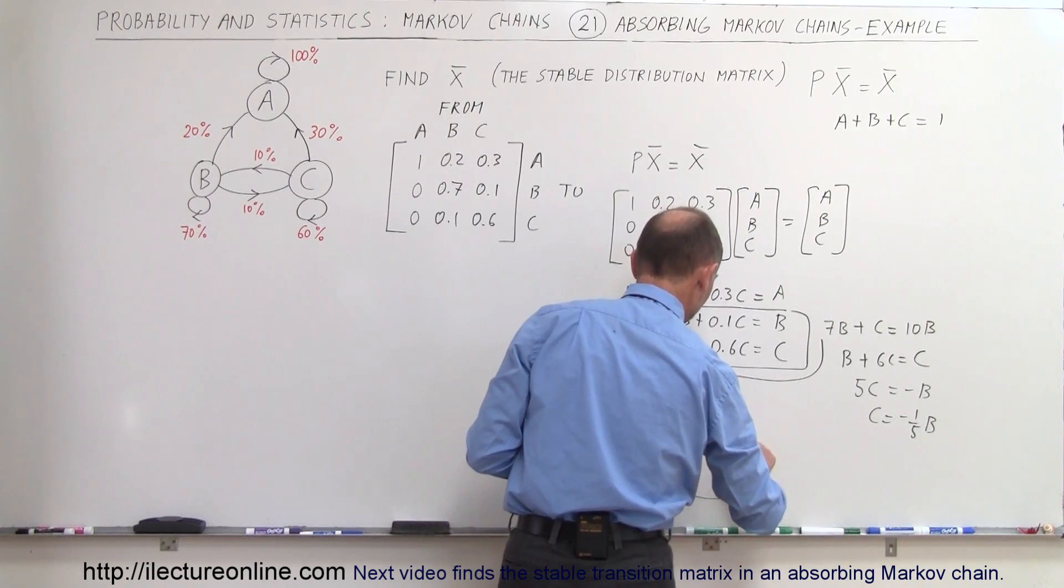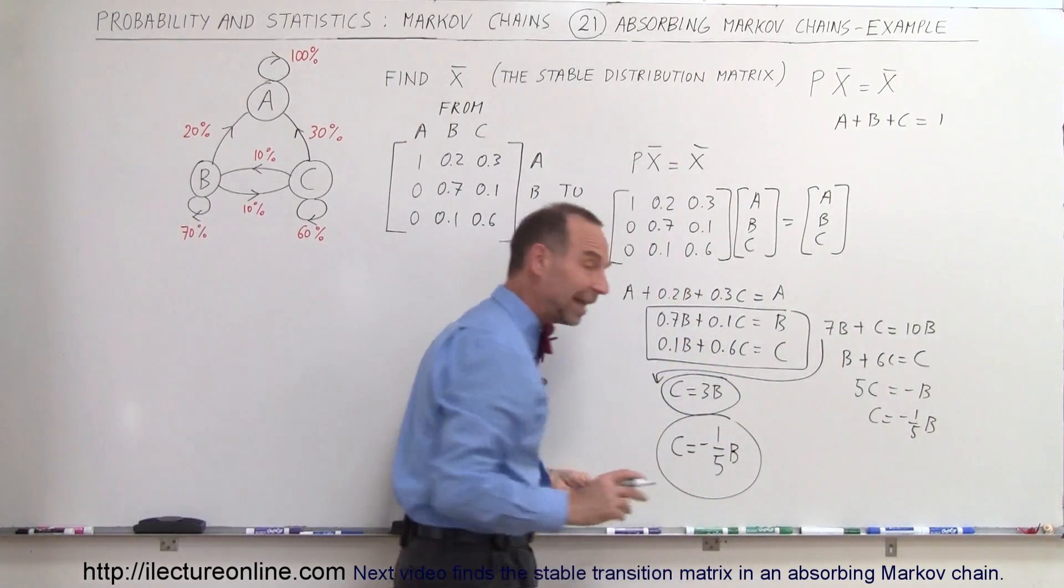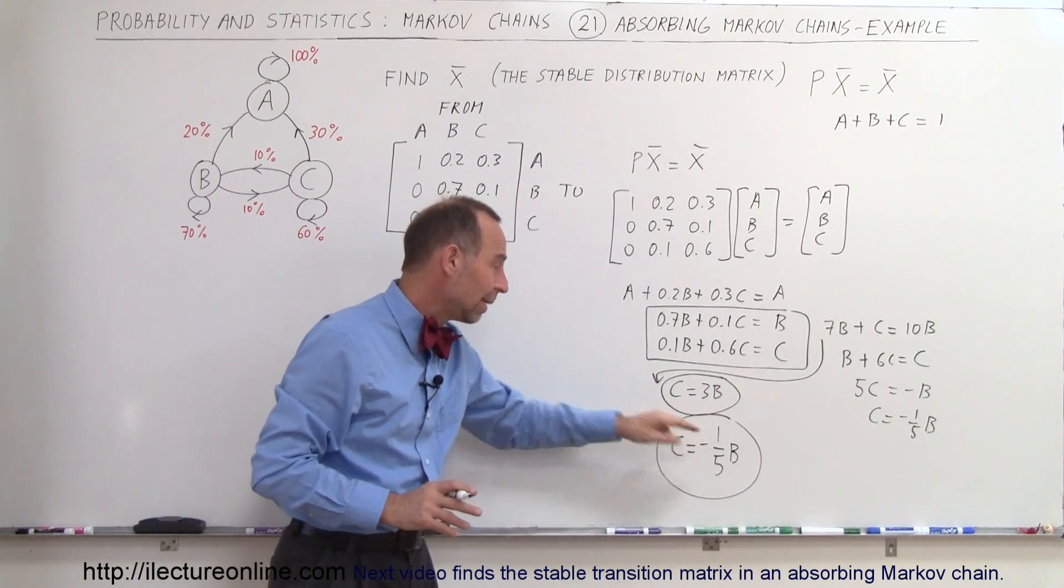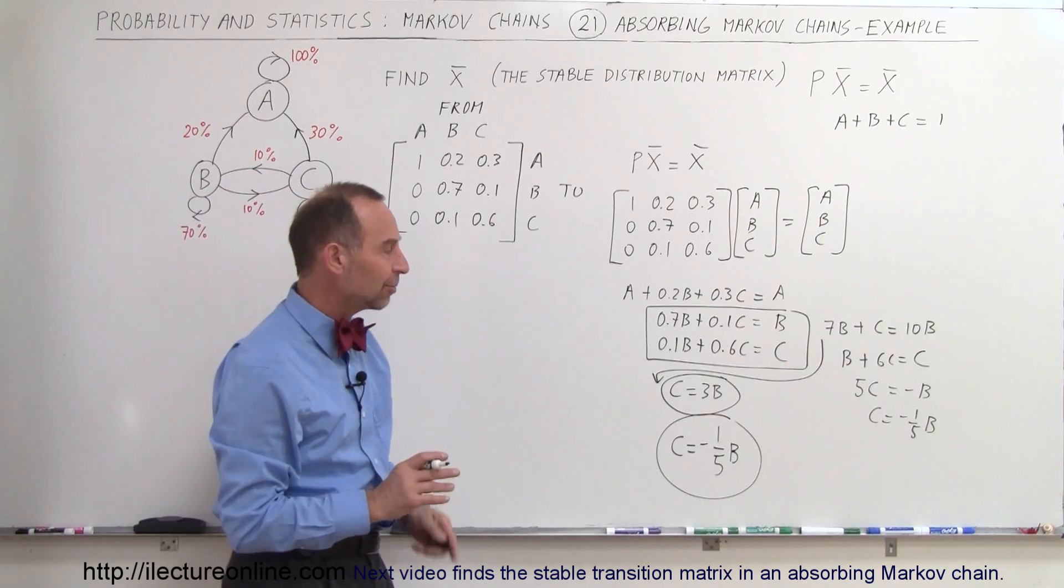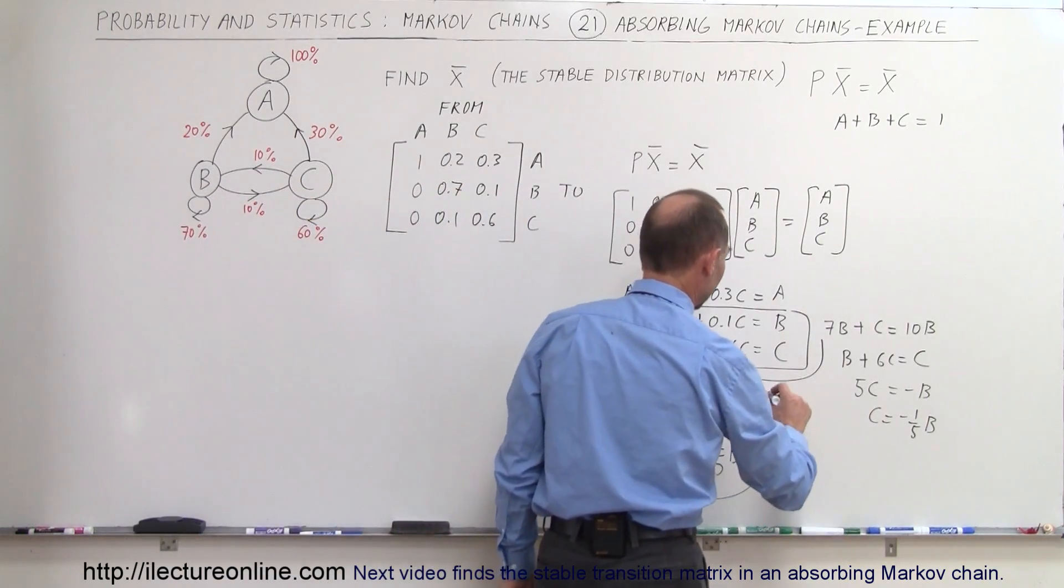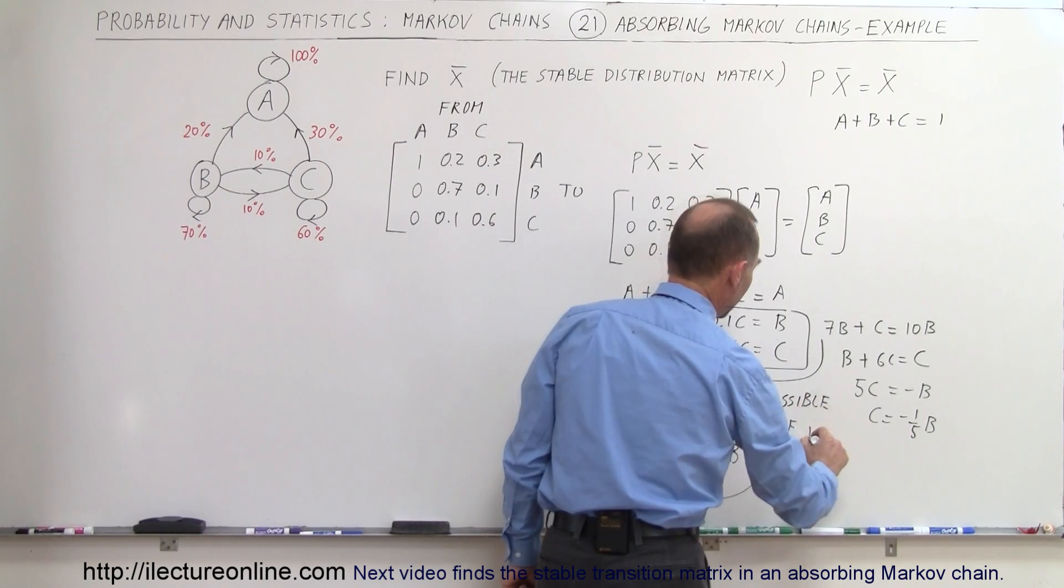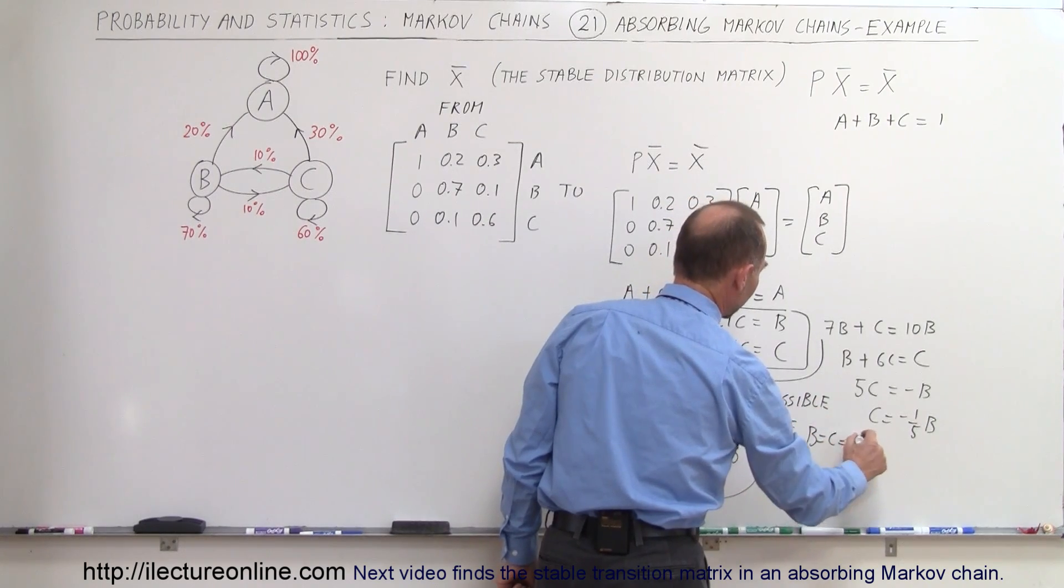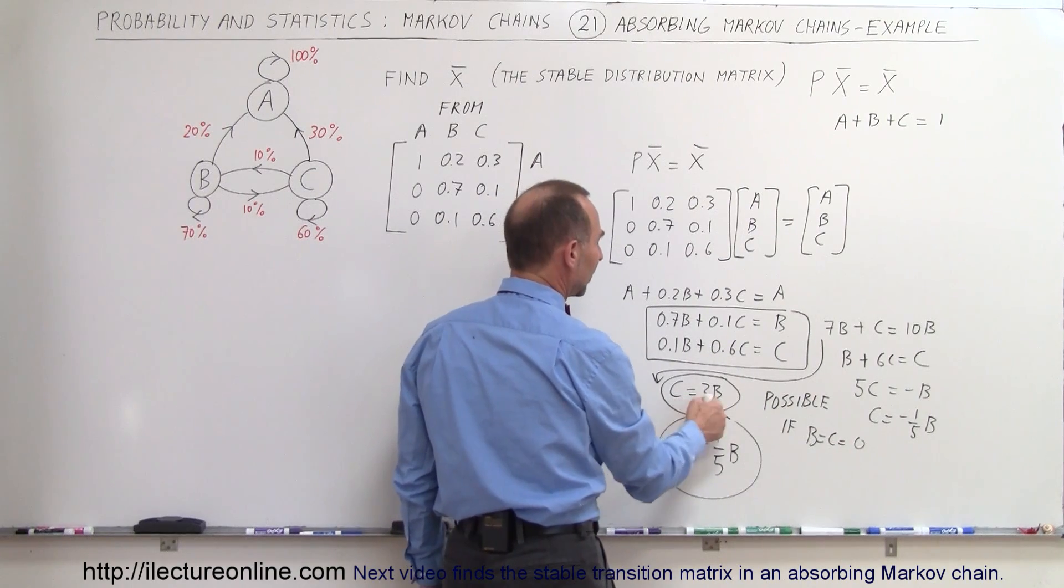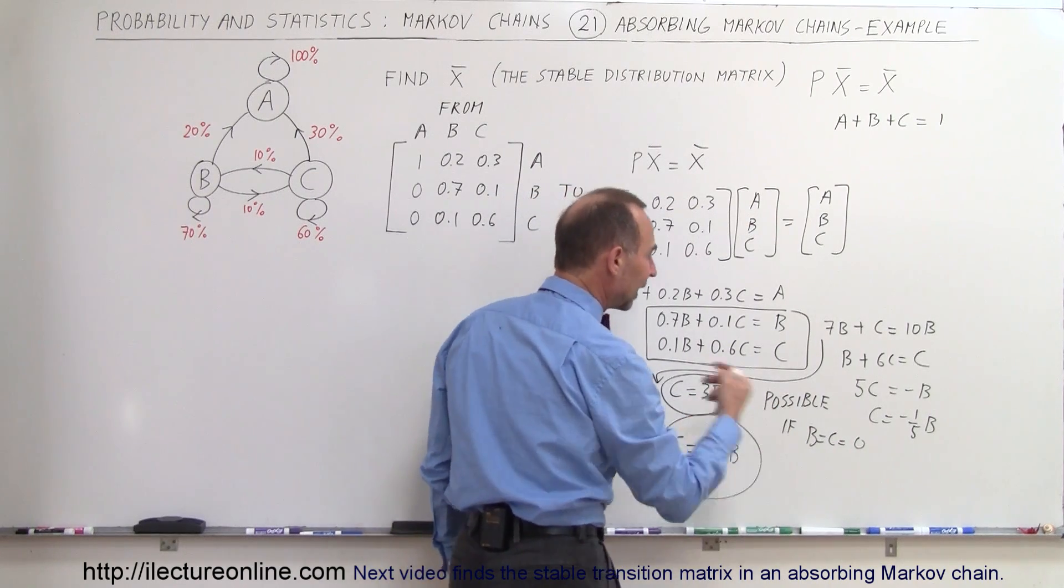I know that at the same time C cannot equal 3B and C cannot equal negative 1/5B. That's impossible. The only way that is possible is if B equals C equals 0, because if C and B are equal to 0, then 0 equals 0 and 0 equals 0, and then that would be correct.